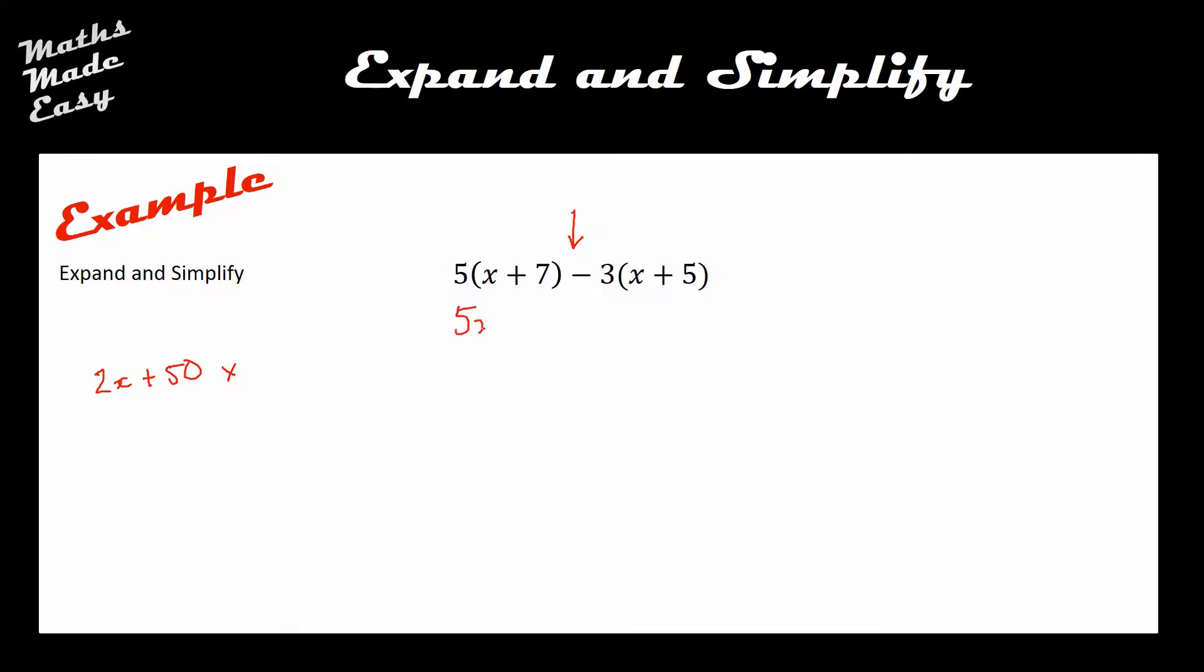To start off with, 5 times x is 5x and 5 times this positive 7 here is positive 35. Then this is a negative 3 times x which is negative 3x, and negative 3 times positive 5 which is negative 15. When I simplify all of those together, my 5x minus 3x is going to create 2x, but the plus 35 and the minus 15 actually combine to make positive 20 left over.